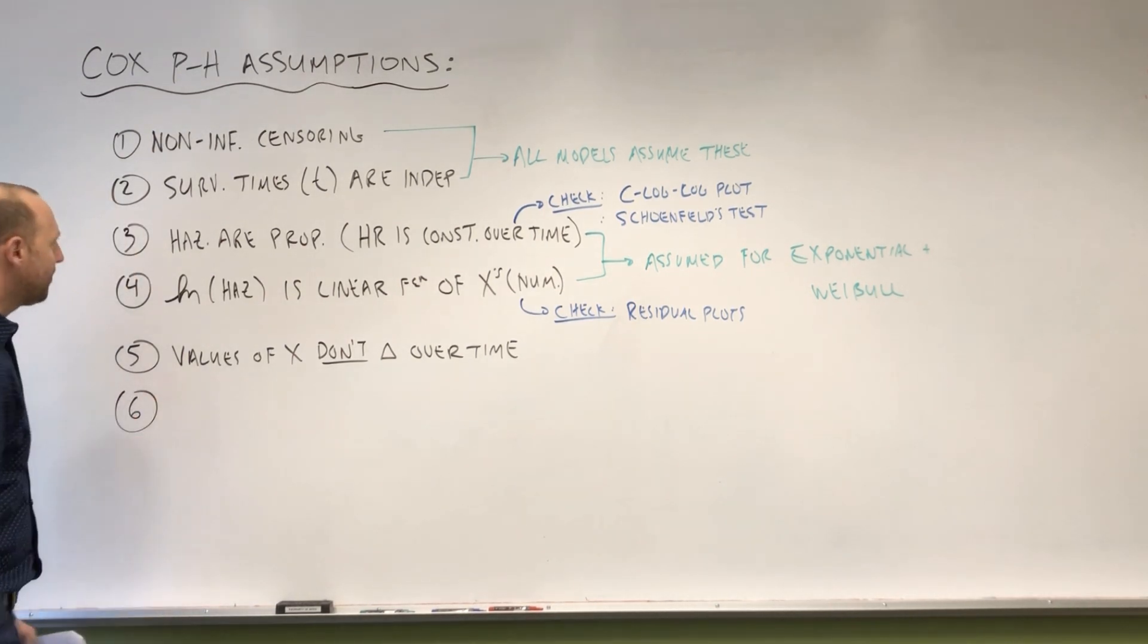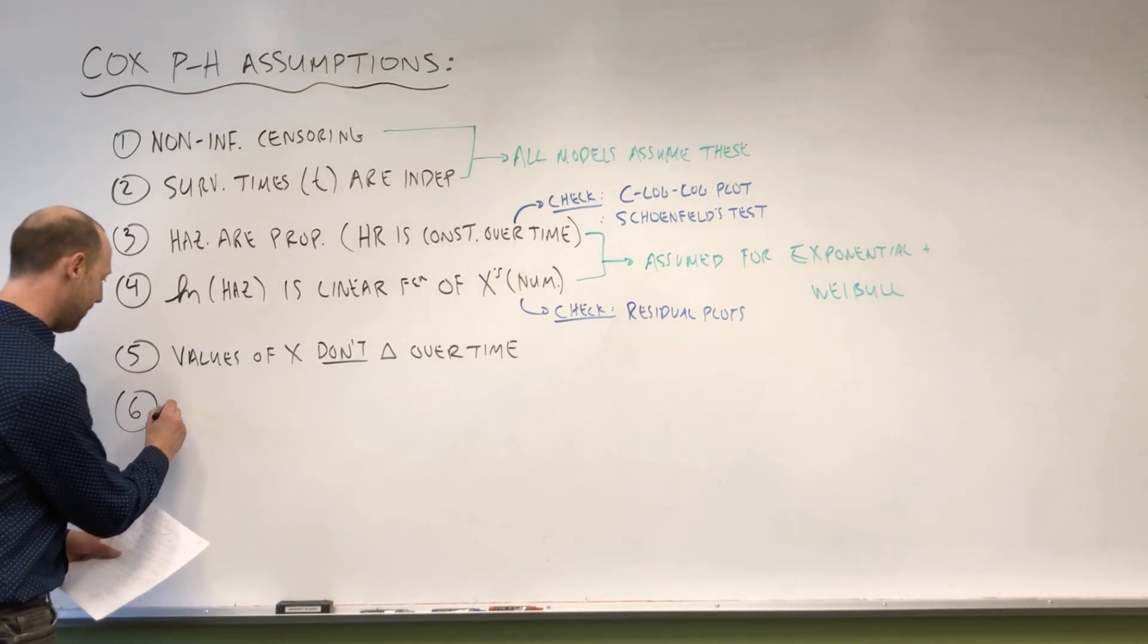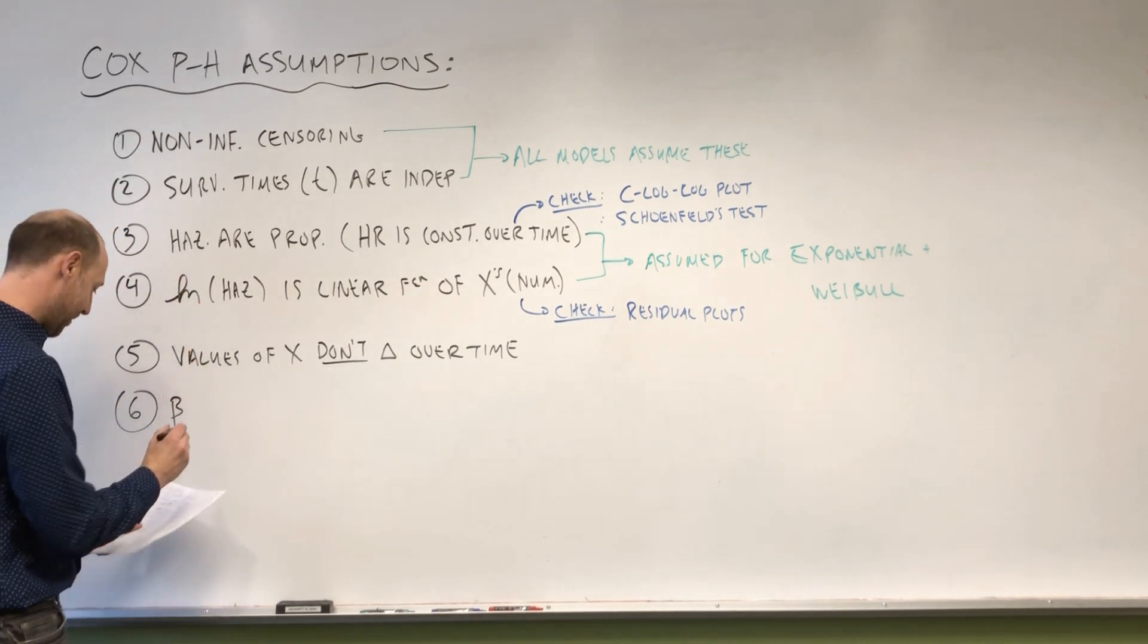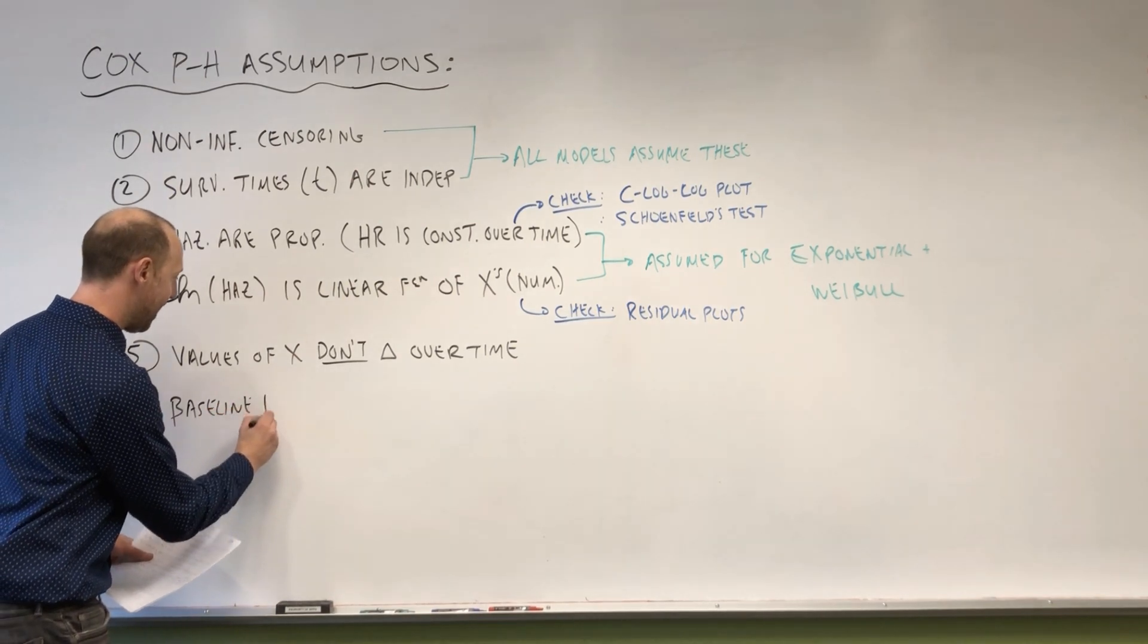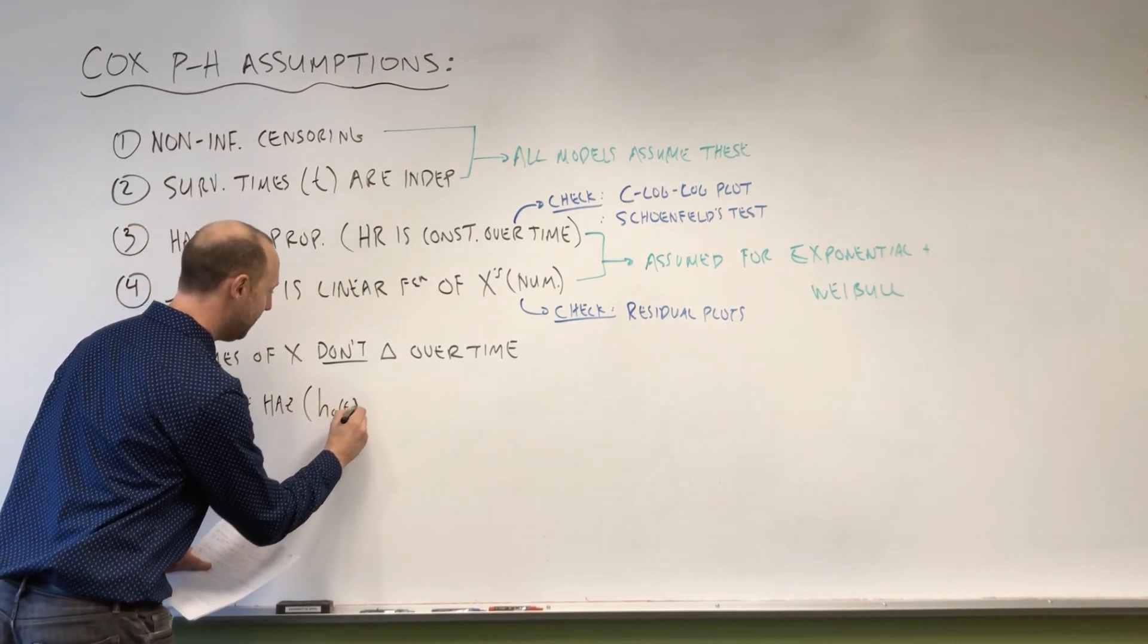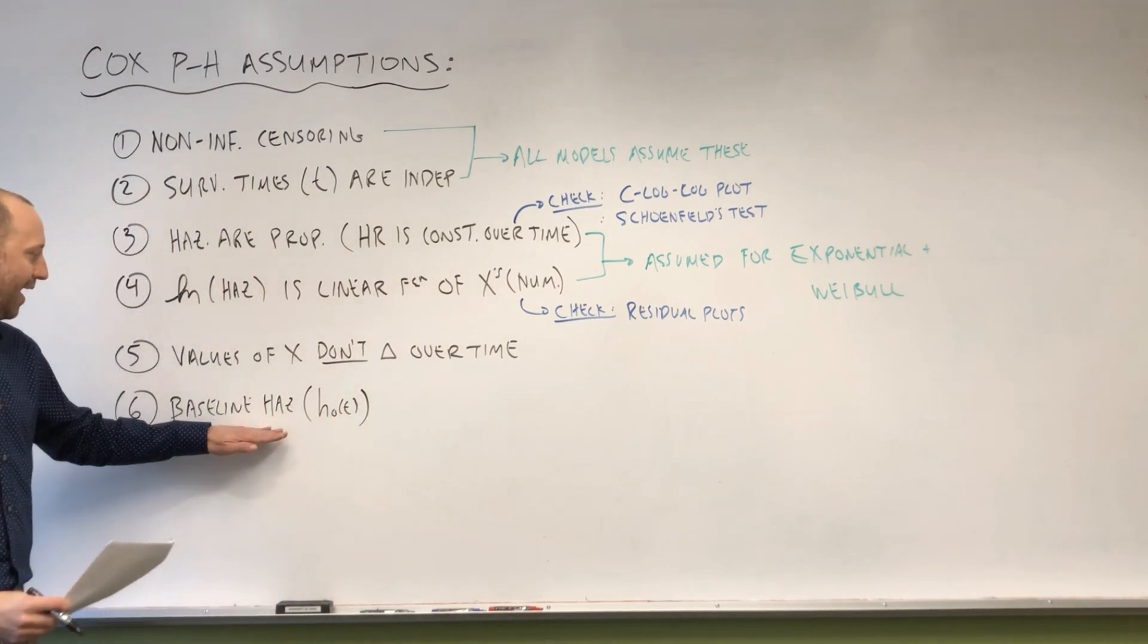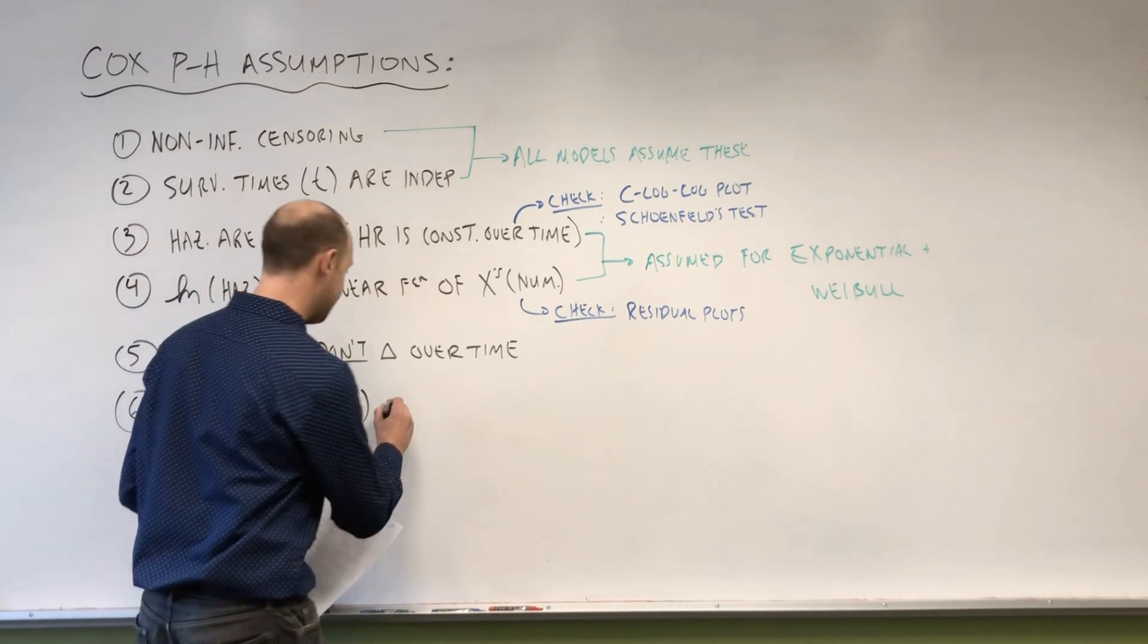And then the sixth one, I'm going to write it down. I don't know if this should be called an assumption or just a fact about Cox proportional hazard model, but either way, it's worth mentioning in here. So I'm going to put it here, that the baseline hazard, write that h naught of t, so the hazard for the reference group that's allowed to fluctuate over time, is unspecified.